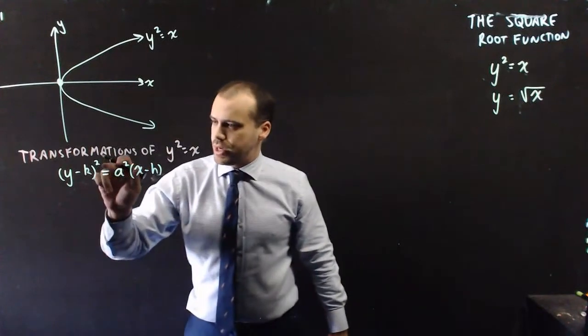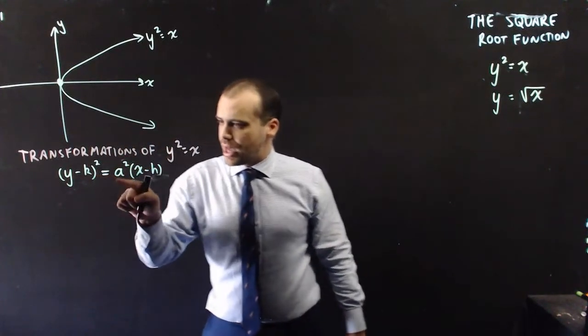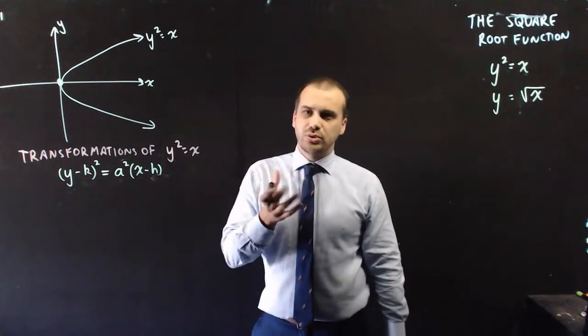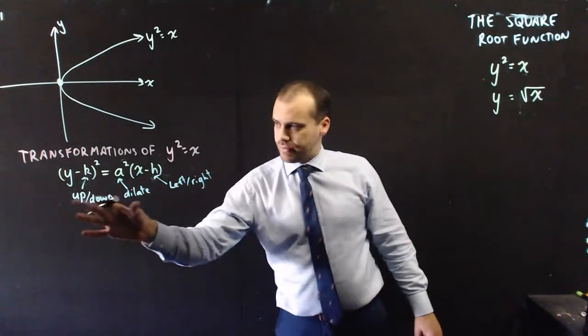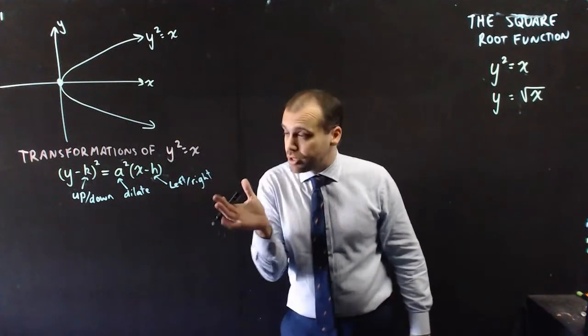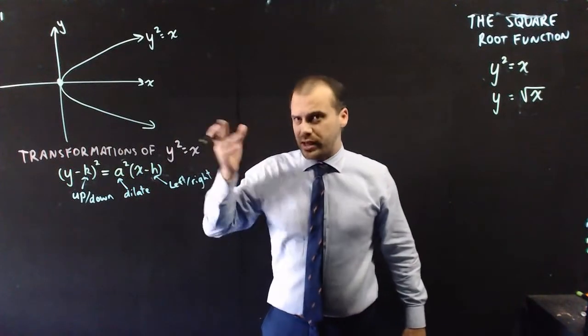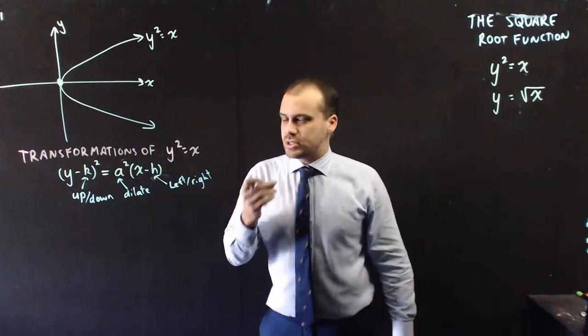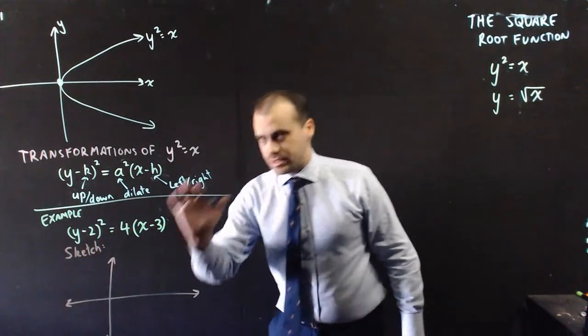Now, our basic form of this equation is as follows: y minus k all squared equals a squared times x minus h. Now, the k, a, and h values will do what you expect them to do based on your previous knowledge. The k value will move it up and down. The h value will move it left and right. And the a value will dilate it around the x axis by that factor.